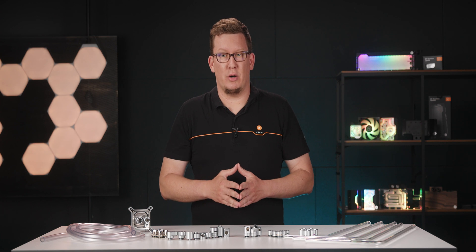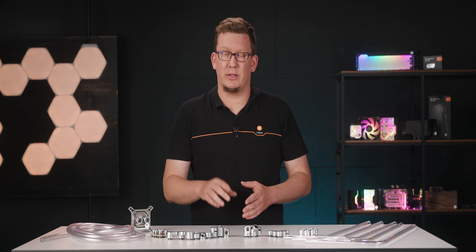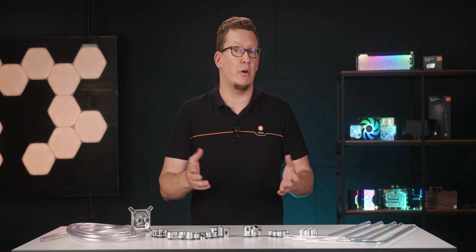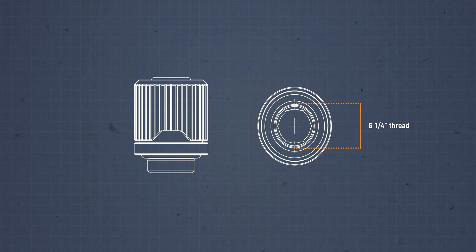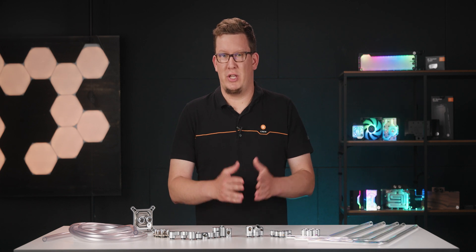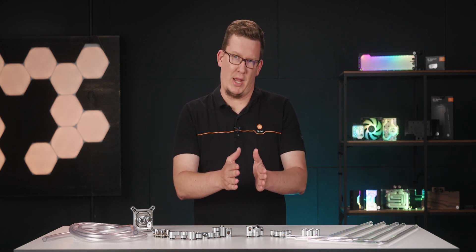It's very important to know that choosing thicker tubes or bigger fittings will not result in greater flow rates or better performance. All connections on mainstream liquid cooling parts use the G1/4 thread, which, depending on the fitting used, has a cross-section of 9-10 millimeters. Meaning, even if you choose thicker tubes, at the end of the tube the fitting will narrow the flow down. If you require greater flow rates, choose a more powerful pump.